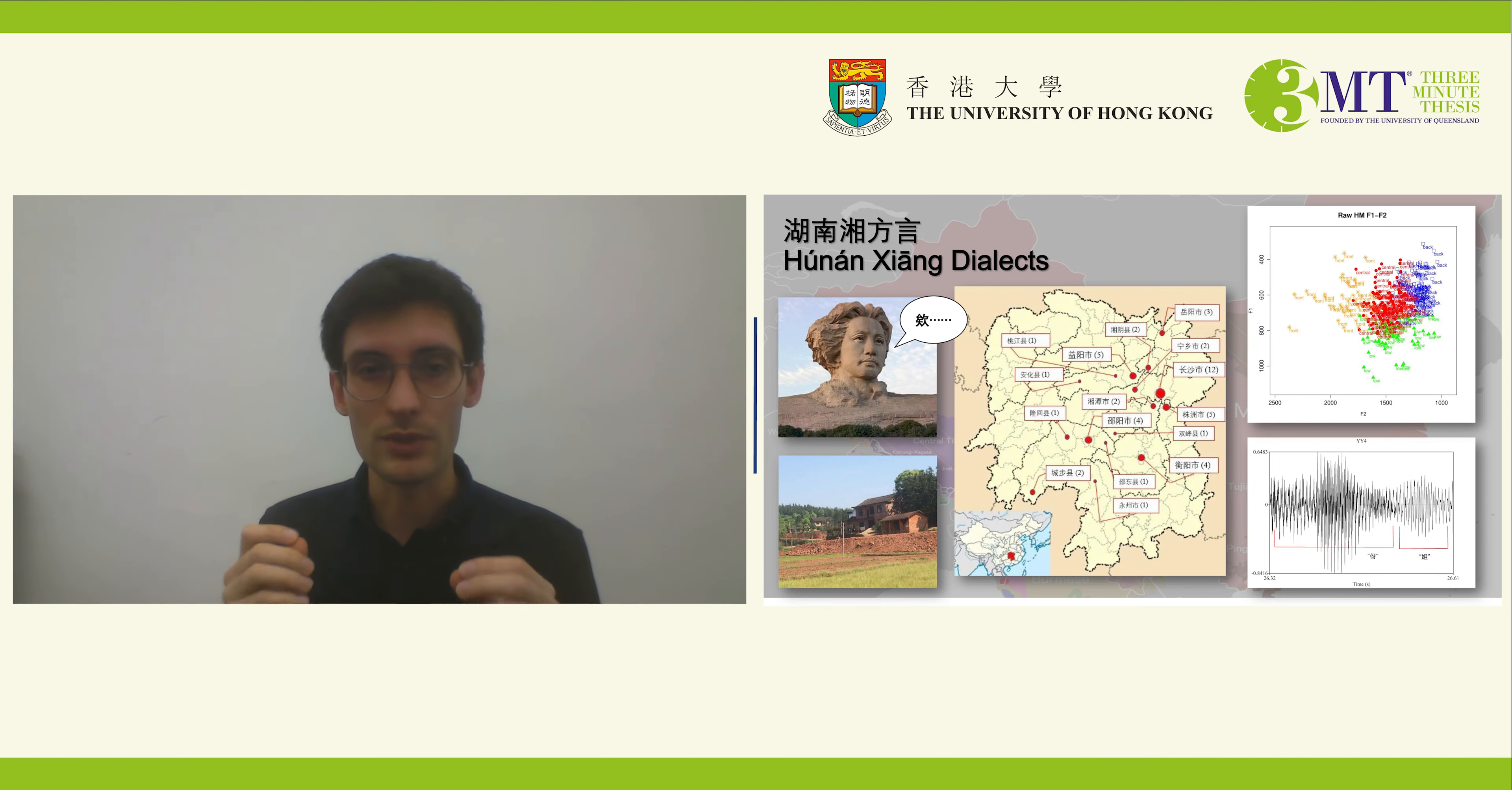Xiang isn't often given much attention in descriptions of Chinese, largely because it is difficult to define linguistically. There's a lot of variation going on. Oftentimes, the speech in one locality in Hunan may be incomprehensible to someone just a few miles away, and it's difficult to pinpoint a standard version of Xiang that all speakers can understand.